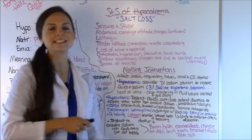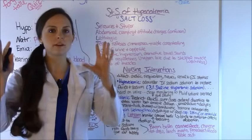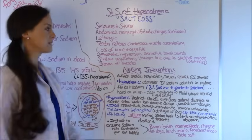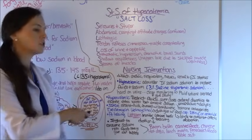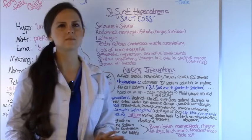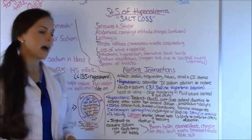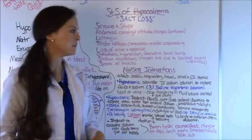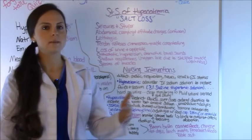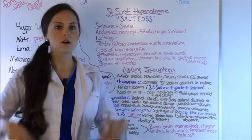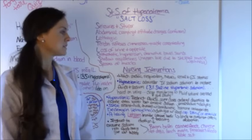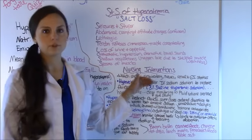Now nursing interventions — this is definitely what you want to pay attention to because your professors and the NCLEX are going to hit on this. First intervention: watch your cardiac status, respiratory status, neuro, renal, and GI status — all these systems are going to be affected. Next, if the patient is hypovolemic — remember, this is where they've had diarrhea, vomiting, and lost water and sodium — you'll administer an IV sodium solution to restore the balance of fluids and sodium.